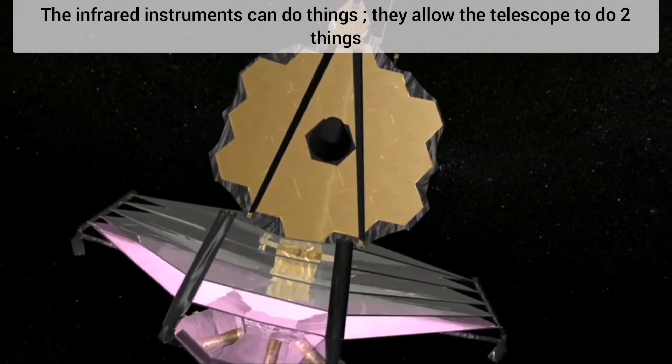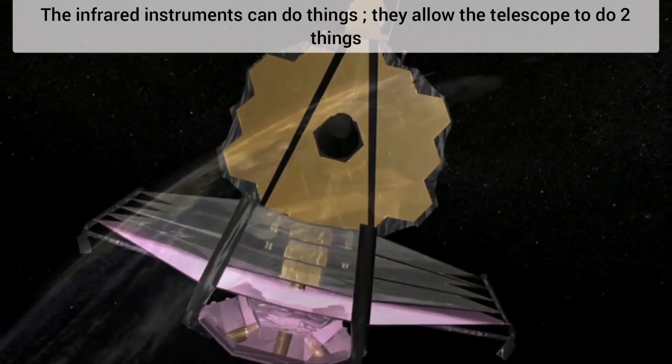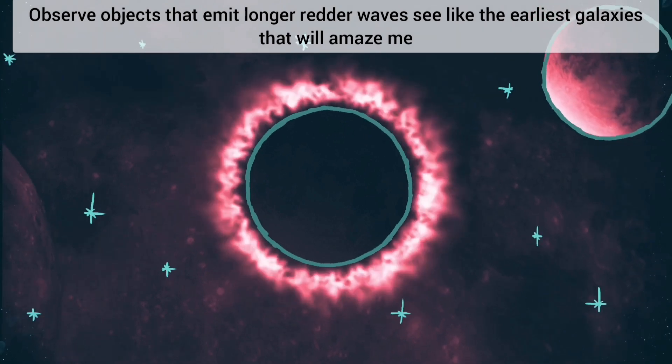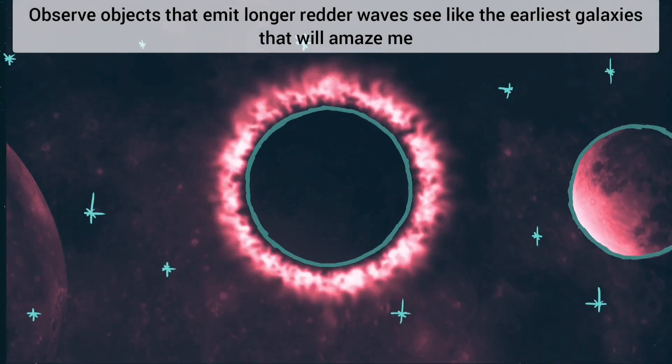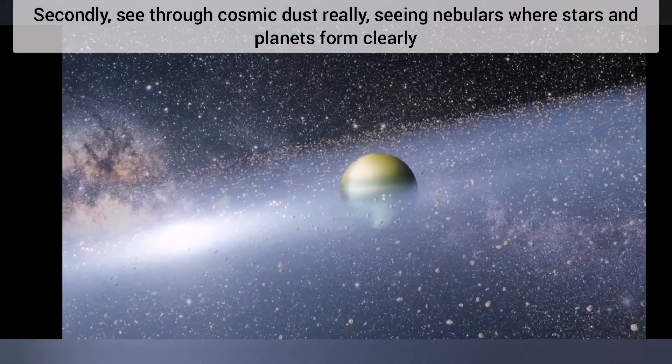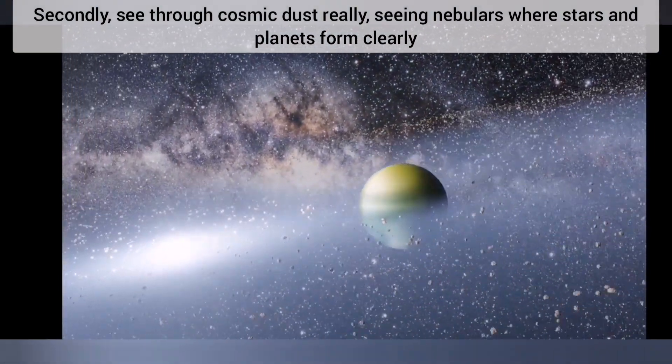The infrared instruments allow the telescope to do two things. Observe objects that emit longer, redder waves, like the earliest galaxies that will amaze. Secondly, see through cosmic dust, really, seeing nebulas where stars and planets form, clearly.